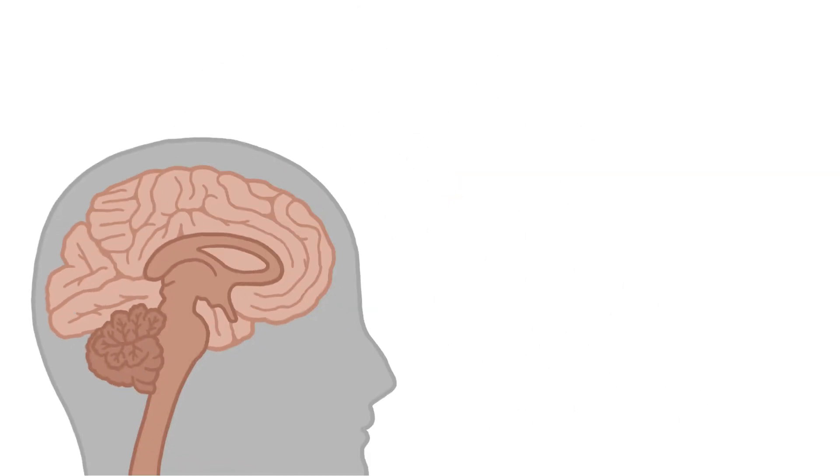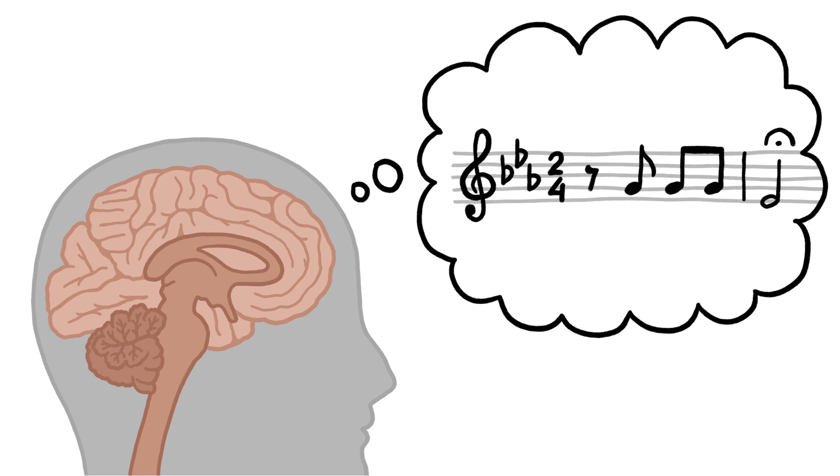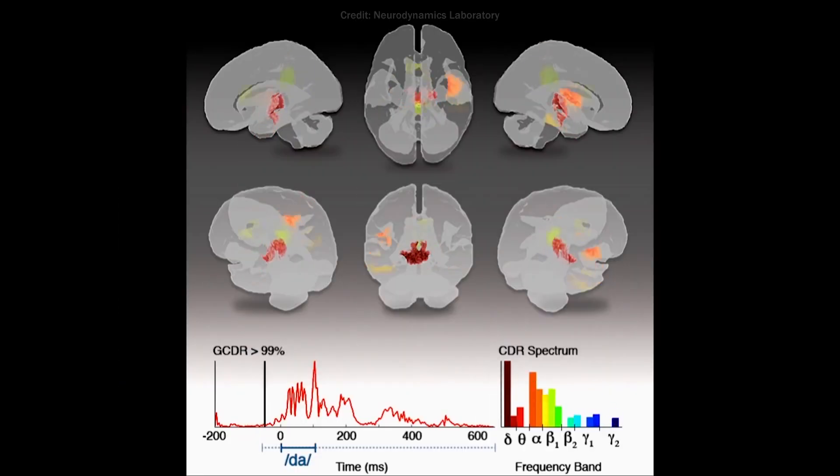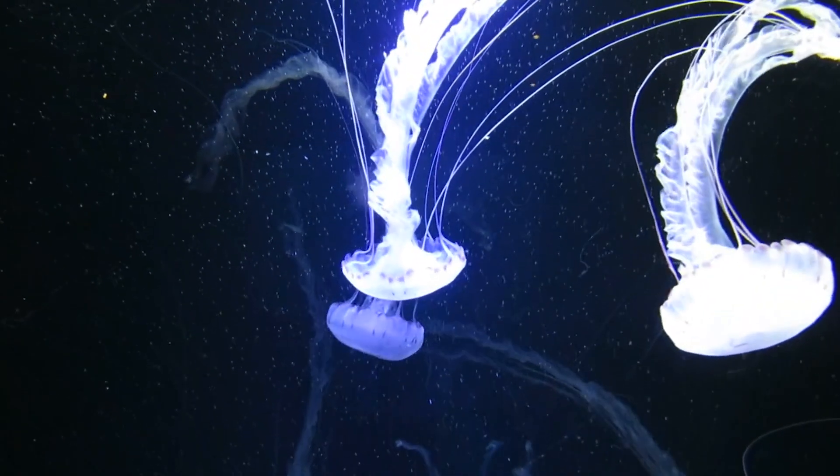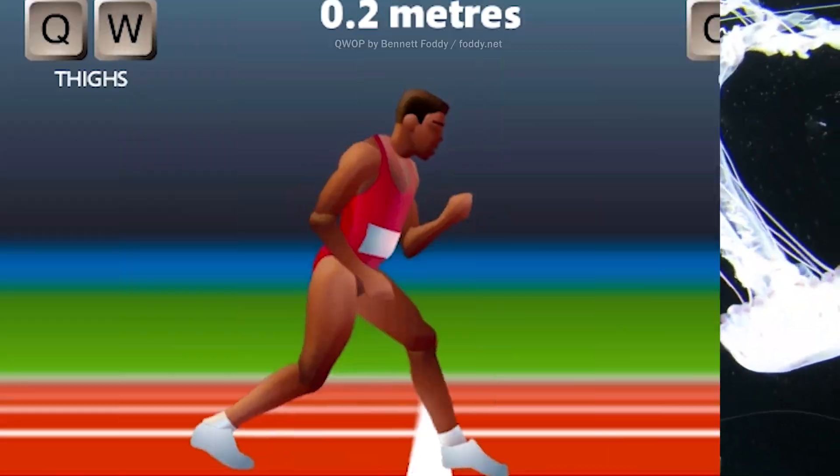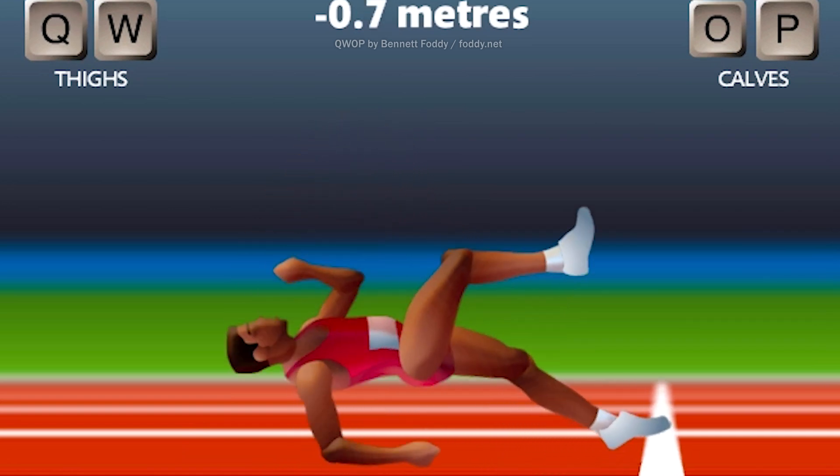In some ways, it's crazy to think that the incredible things our brains do rely on repeating, yet fleeting, patterns of electrical activity. But on the other hand, generating rhythms is sort of what nervous systems evolved to do in the first place. We really can't get anywhere without them.